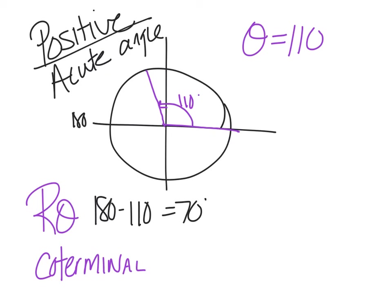For coterminal angles, just keep adding and subtracting 360 to get right back to 110. If I'm already at 110 and add 360, that gives me 470 degrees. If you graph 470, you go around once to 360 and then another 110, putting you right back where you started. You could also subtract 360: 110 minus 360 is negative 250. So going positive 110 is the same as going negative 250.